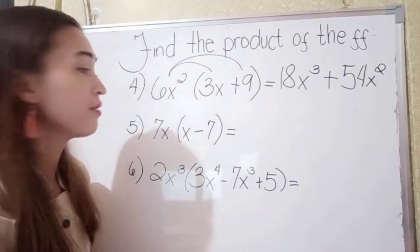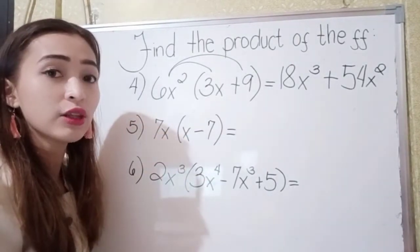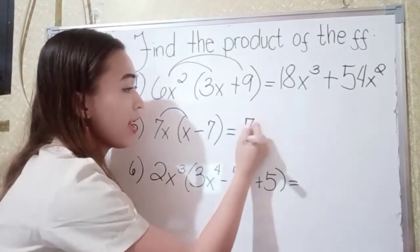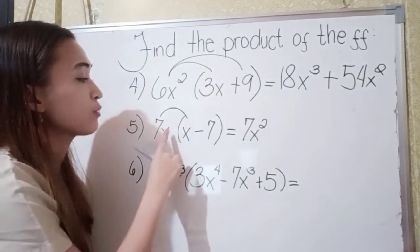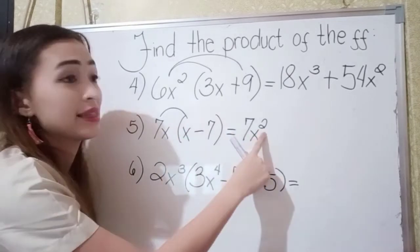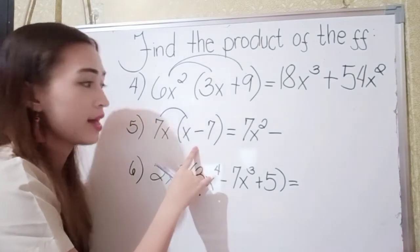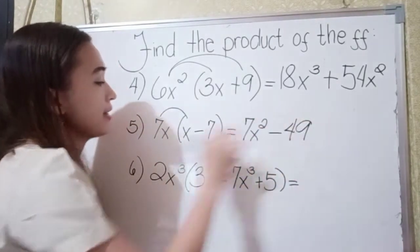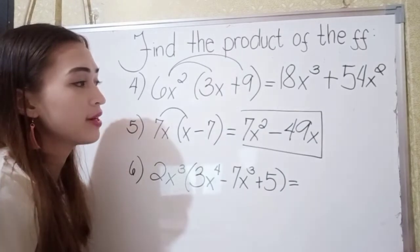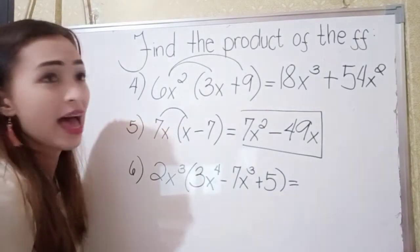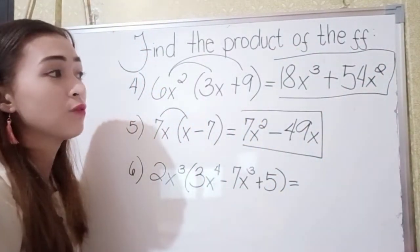For number 5, we have 7x times x minus 7. Using the distributive property: 7x times x is 7x squared, because 1 plus 1 is 2. Next, since this is negative, 7 times negative 7 is negative 49, so we add negative 49x. Our final answer in number 5 is 7x squared minus 49x. And our answer in number 4 is 18x cubed plus 54x squared.